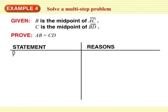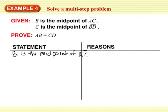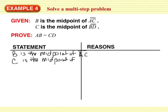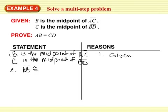Let's write down what's given. B is the midpoint of AC and C is the midpoint of BD — that's number one, and number one is given. For number two, because B is the midpoint of AC, you know that segment AB is congruent to segment BC. That is the definition of midpoint.